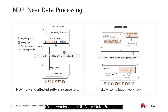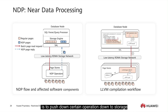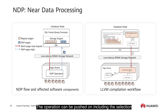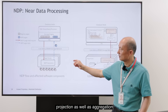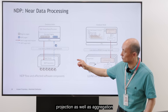One tactic is NDP, near data processing. The purpose of near data processing is to push down certain operations down to storage. In computational storage, the operations that can be pushed down include selection, projection, as well as aggregation.